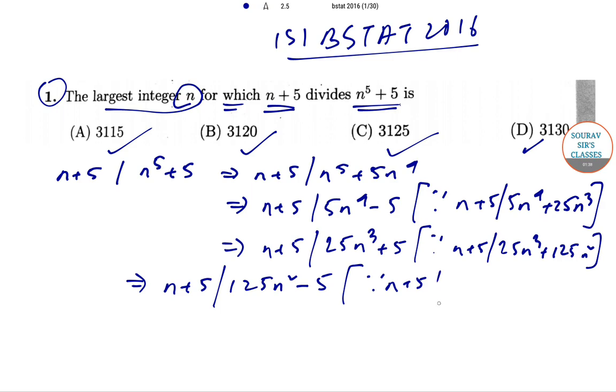This gives us that n+5 divides 625n+5, since n+5 divides 625n+3125.